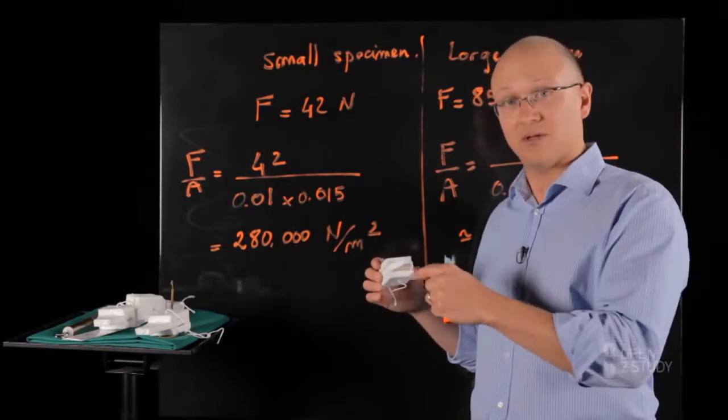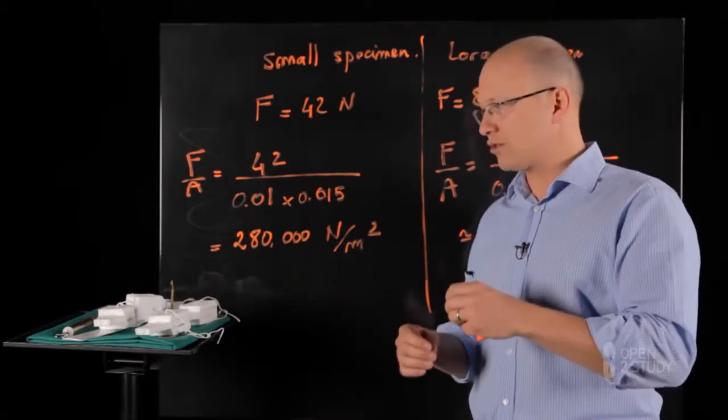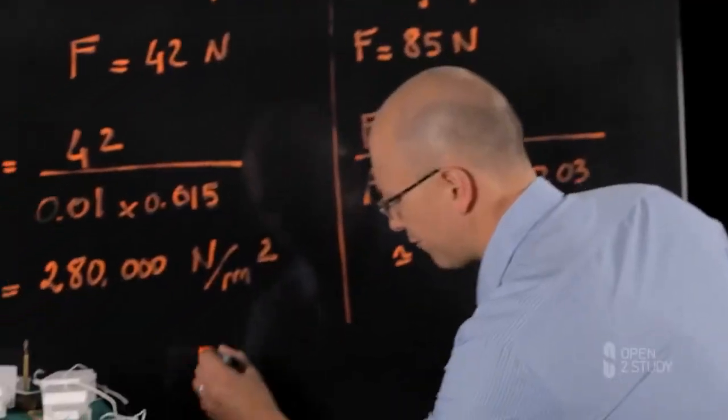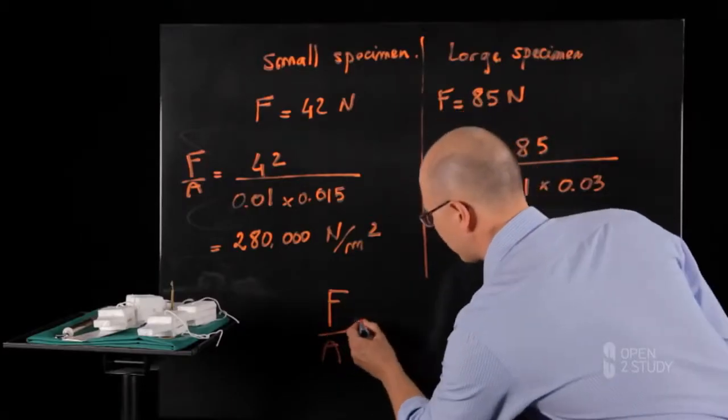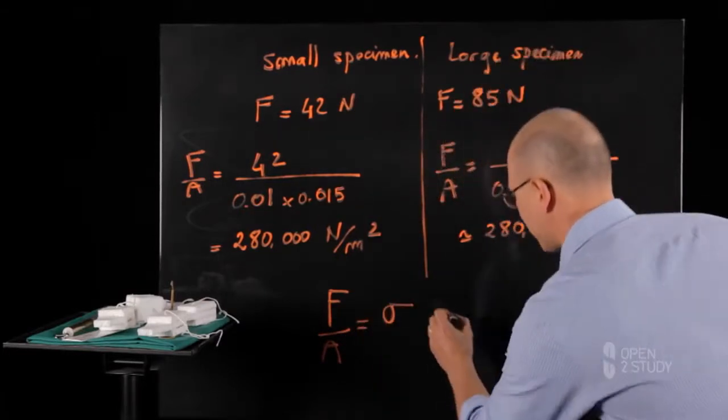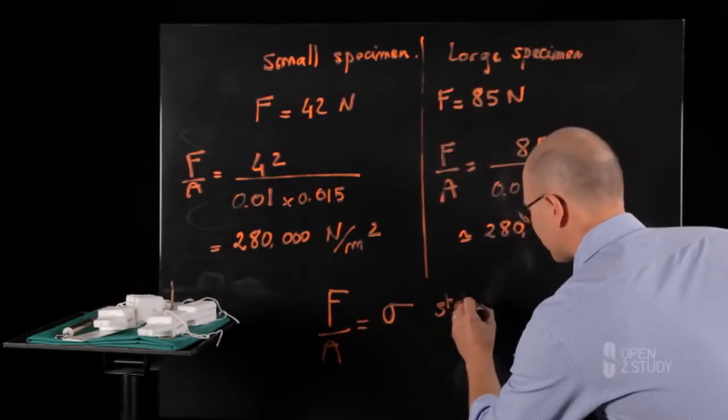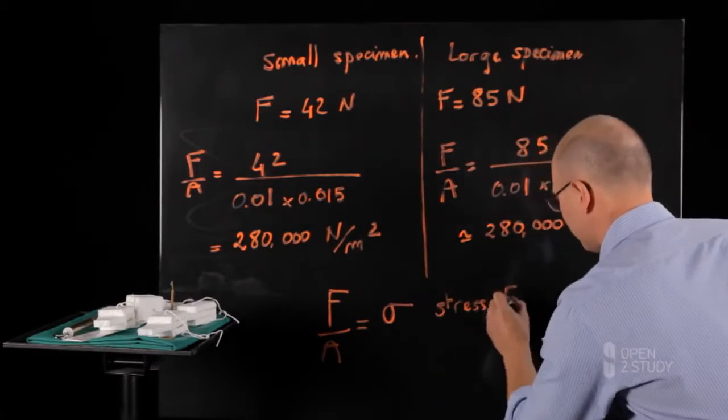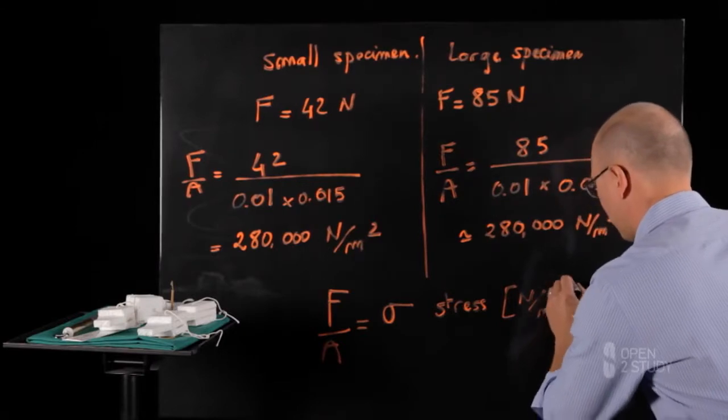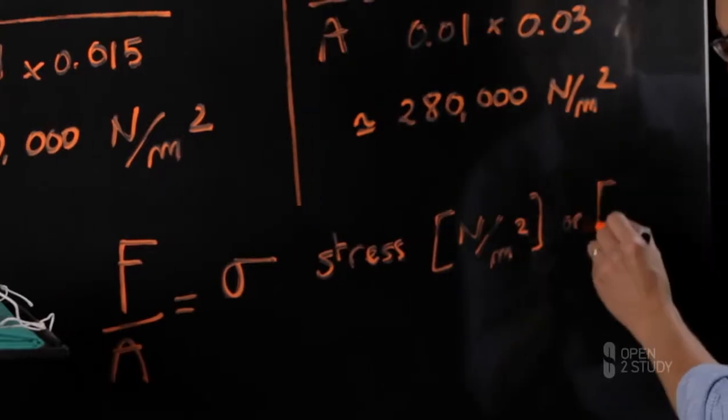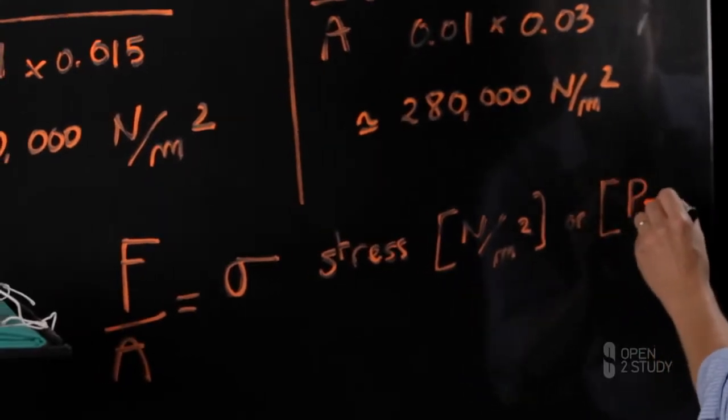In this case, the cross-sectional area. So for a one-dimensional tensile test, the force divided by the cross-sectional area, F over A, is called the stress, noted sigma. And a stress, as you've seen here, has a unit of newton over an area, meter square, or also called pascal and noted PA.